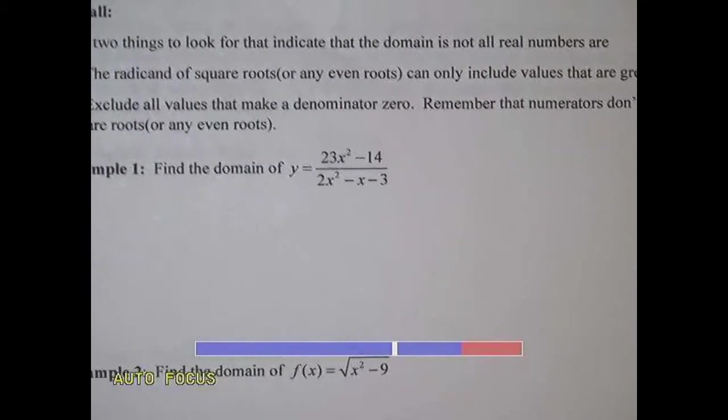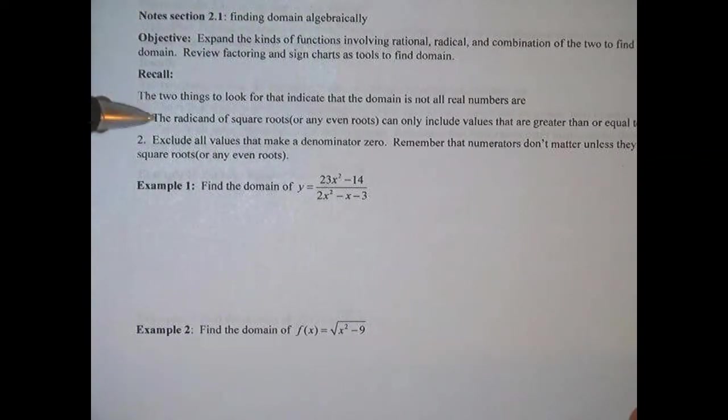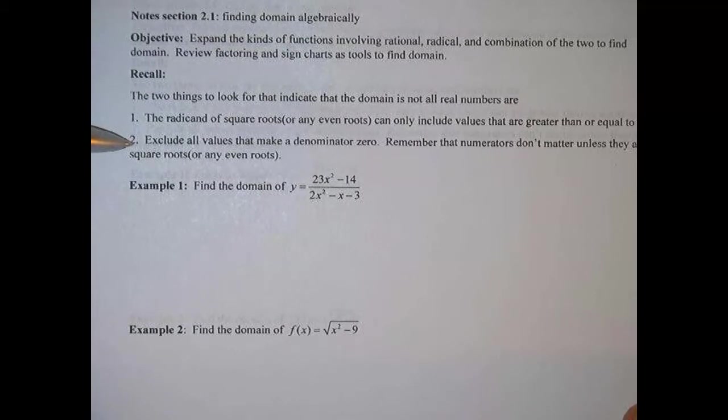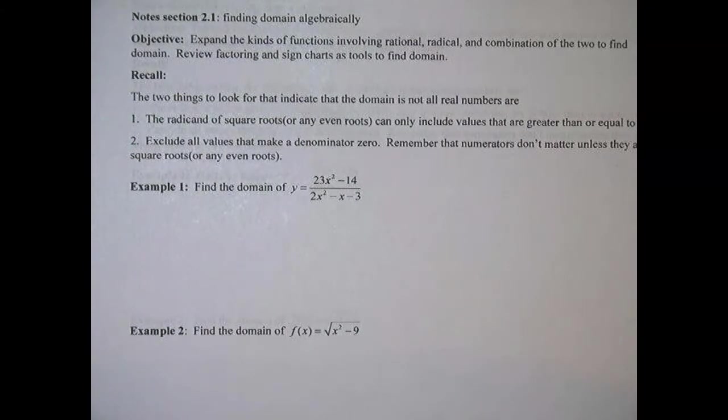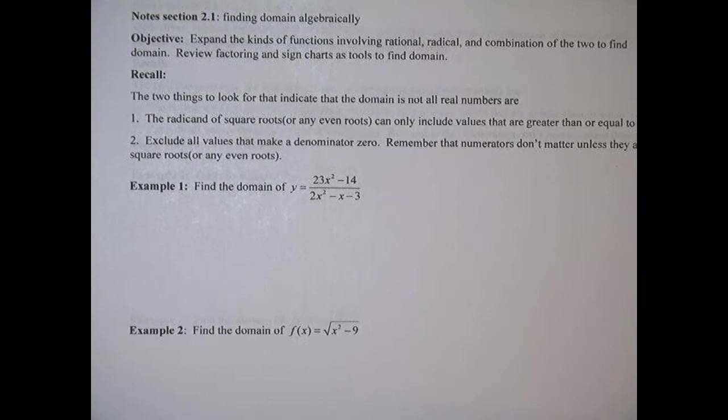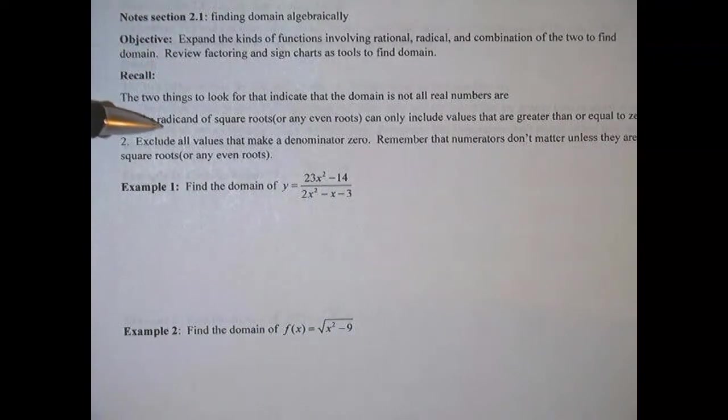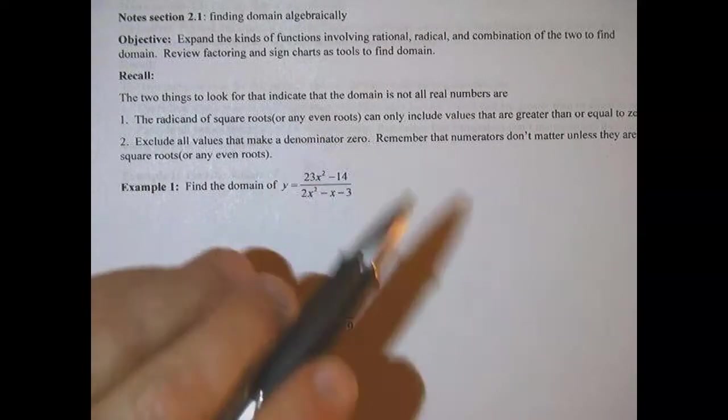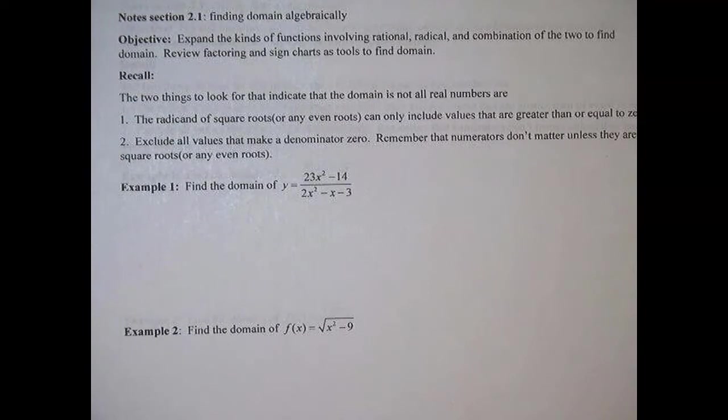Let's look at our first example. The two things to remember here is that the radicand inside of a square root can only be values that are greater than or equal to zero, and the second one is that the denominator cannot be zero, so we exclude anything that will make the denominator zero. We're going to be looking for those same two things. I'm saying square roots, but technically this is true of any even roots. You can't take the fourth root of a negative number or the sixth root of a negative number either.